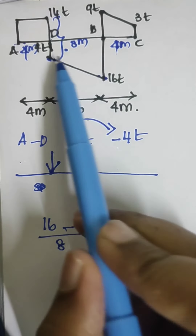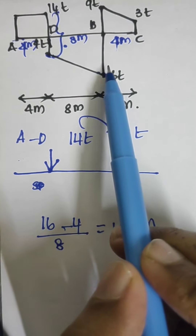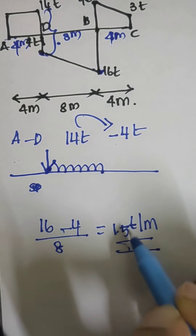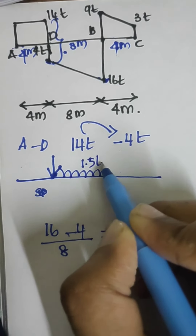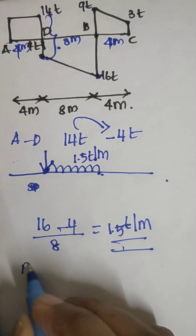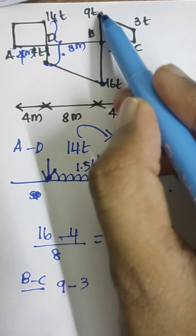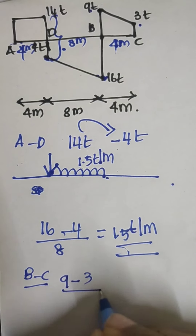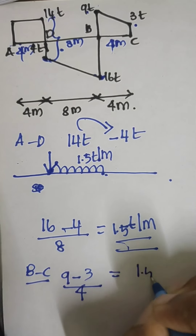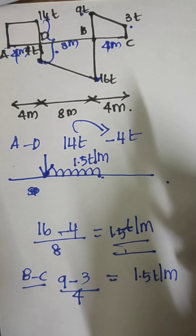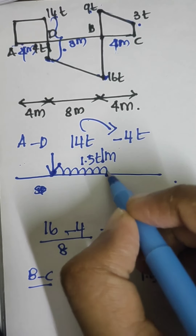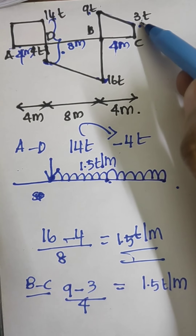From D to B, since the shear force diagram is linear, the load will be a UDL, which we have calculated as 1.5 ton per meter. For B to C, the magnitude is 9 minus 3 over a length of 4 meters: (9 − 3) / 4 = 1.5 ton per meter. The load acts linearly, so it is also a UDL.